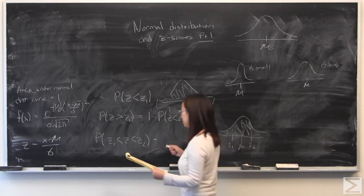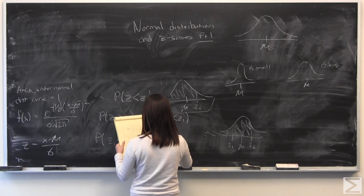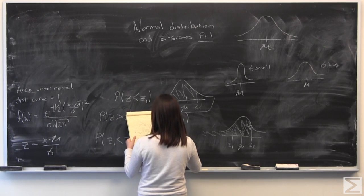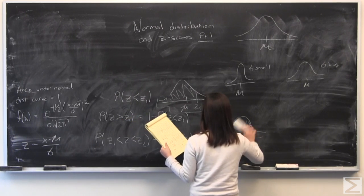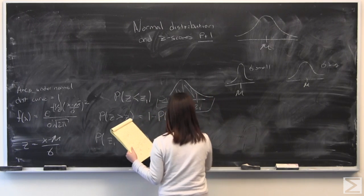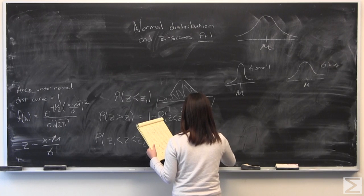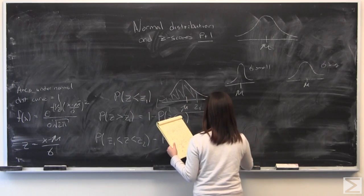probability of finding z between these two values is equal to the probability of finding z less than z2, minus the probability of z less than z1.